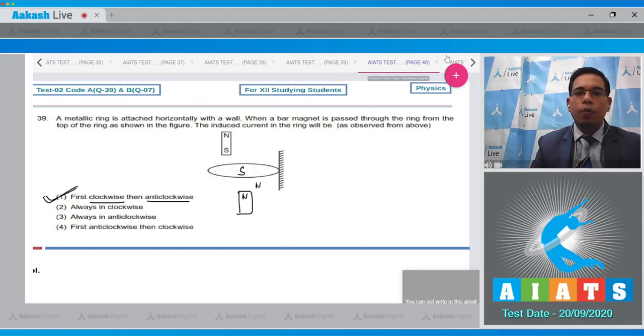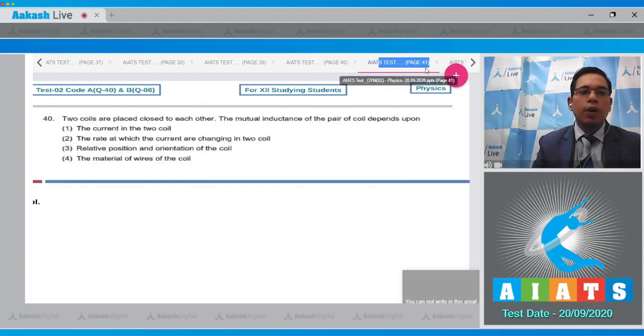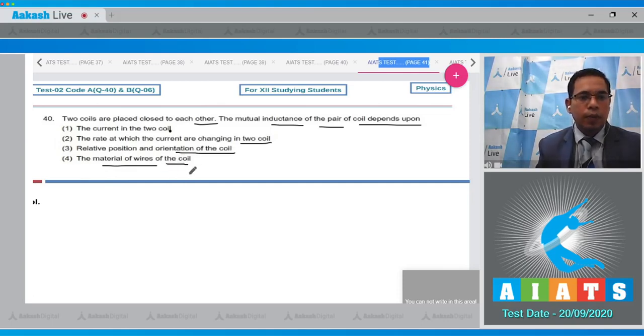Question number 40 states that two coils are placed close to each other. The mutual inductance of the pair of coils depends upon: the current in the coil, the rate at which currents are changing in the two coils, relative position and orientation of the coils, and the material of the wire. As we know, mutual inductance of two coils depends upon the relative position and orientation of the coils. Hence, option number 3 will be the correct answer.